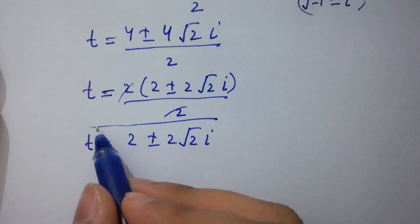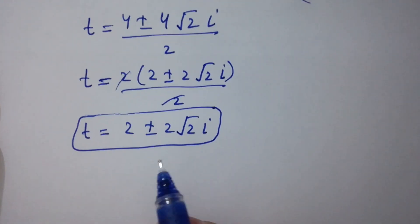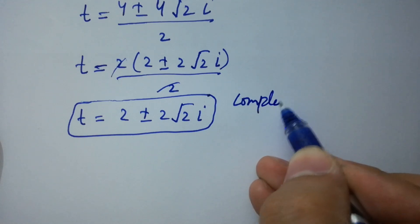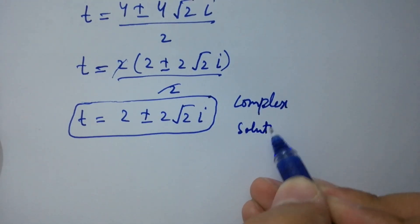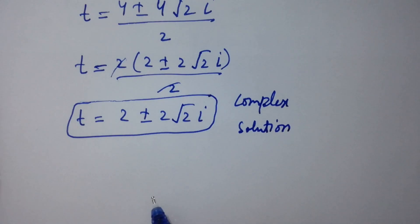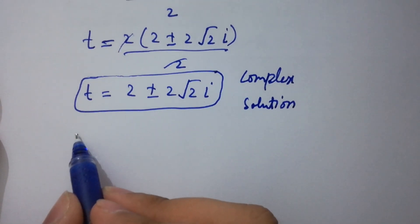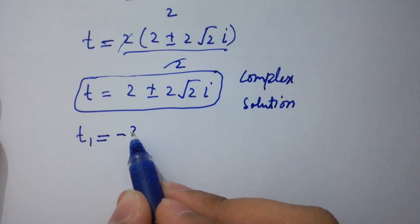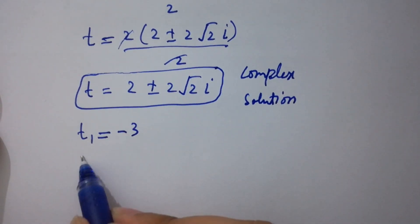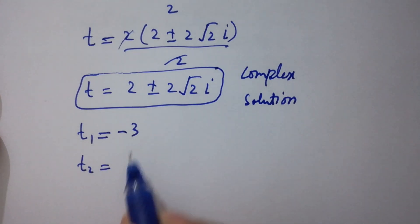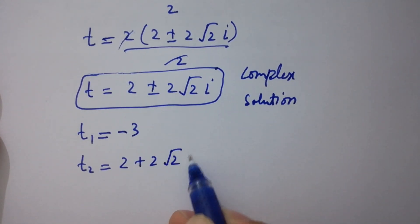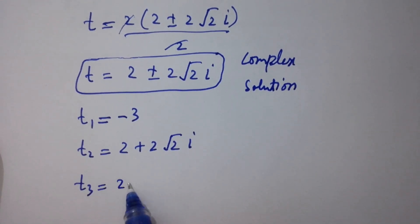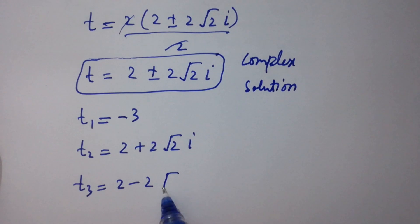These are our complex solutions. So we have three solutions in total: t₁ equals minus 3, t₂ equals 2 plus 2 square root of 2 i, and t₃ equals 2 minus 2 square root of 2 i.